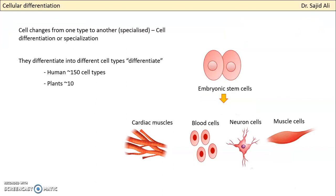For differentiation to occur, the non-specialized cells — embryonic stem cells or other pluripotent cells — during their division, they will have to change their type. They have to become more specialized. This process of changing the type of cells, or becoming specialized cells, we call cellular differentiation — or in some literature, specialization.